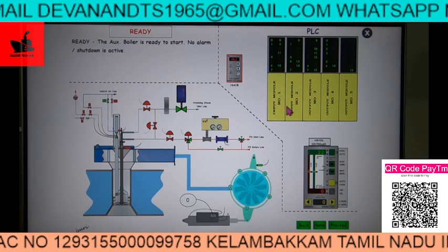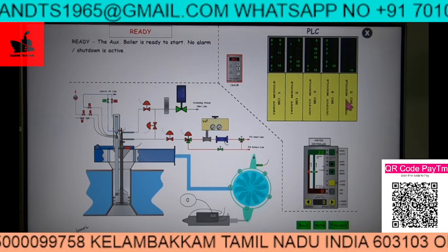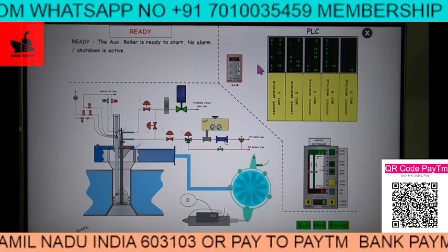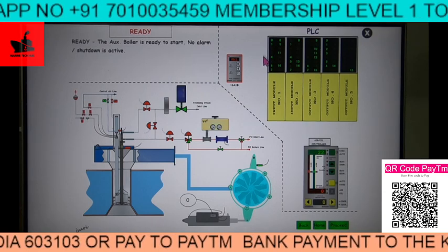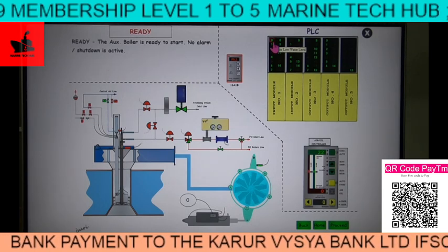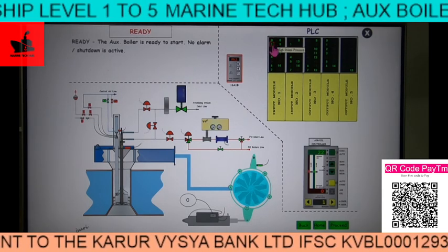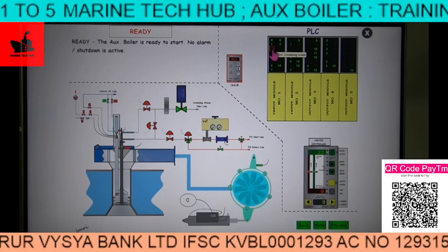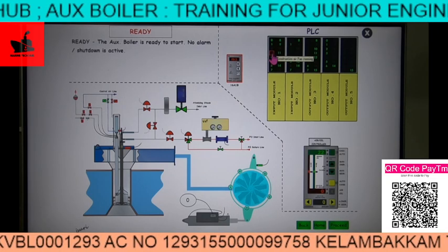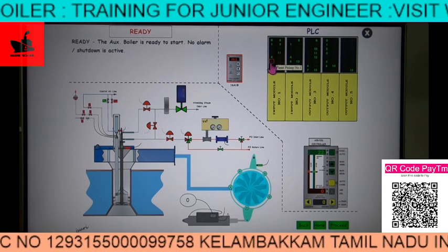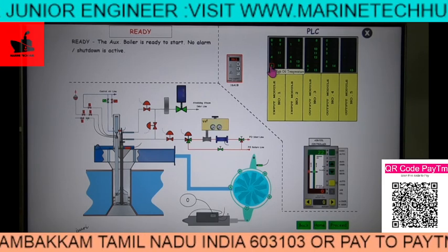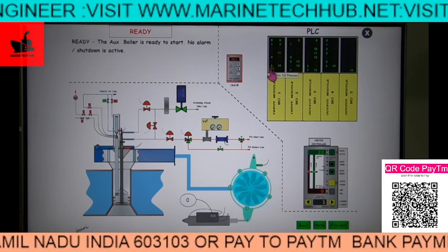We have modules 1, 2, 3, 4, and 5. Each module has numbered signals. Signal 0 is too low water level. Signal 1 is high steam pressure. Signal 2 is low atomizing steam. Signal 3 is combustion air fan running. Signal 4 is lance inserted. Signal 5 is flame pickup number 1. Signal 6 is high oil temperature. Signal 7 is low oil pressure.